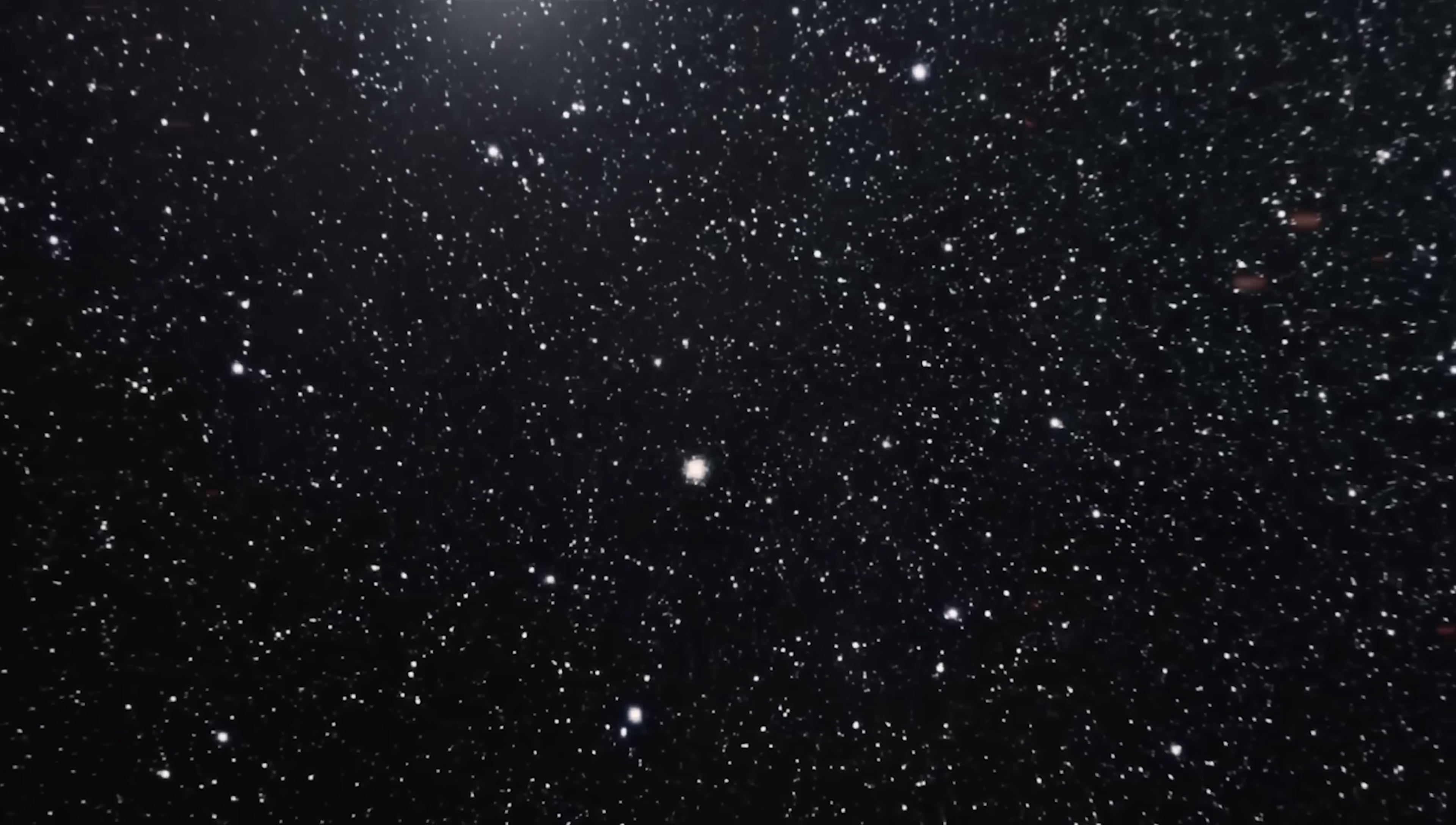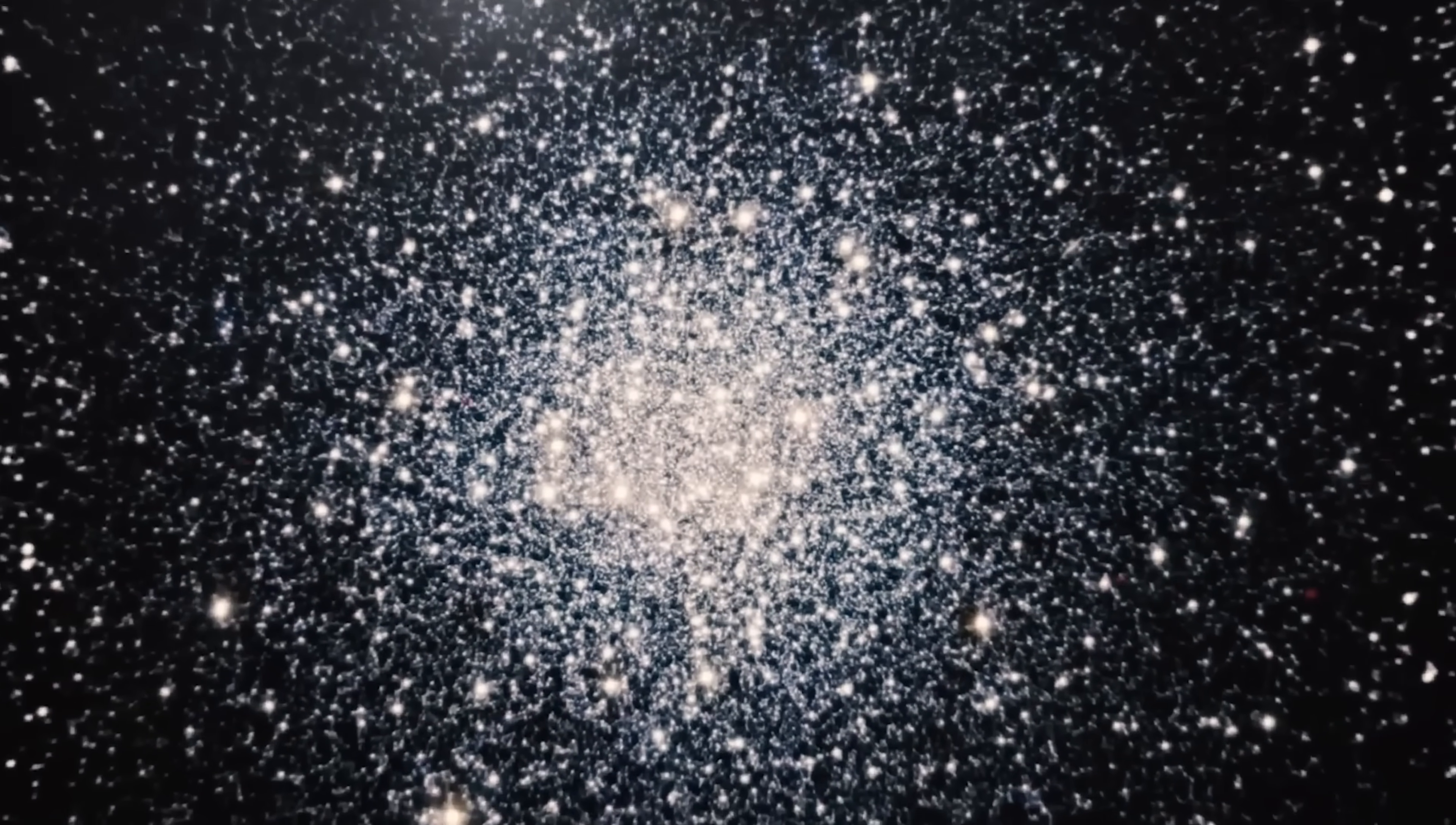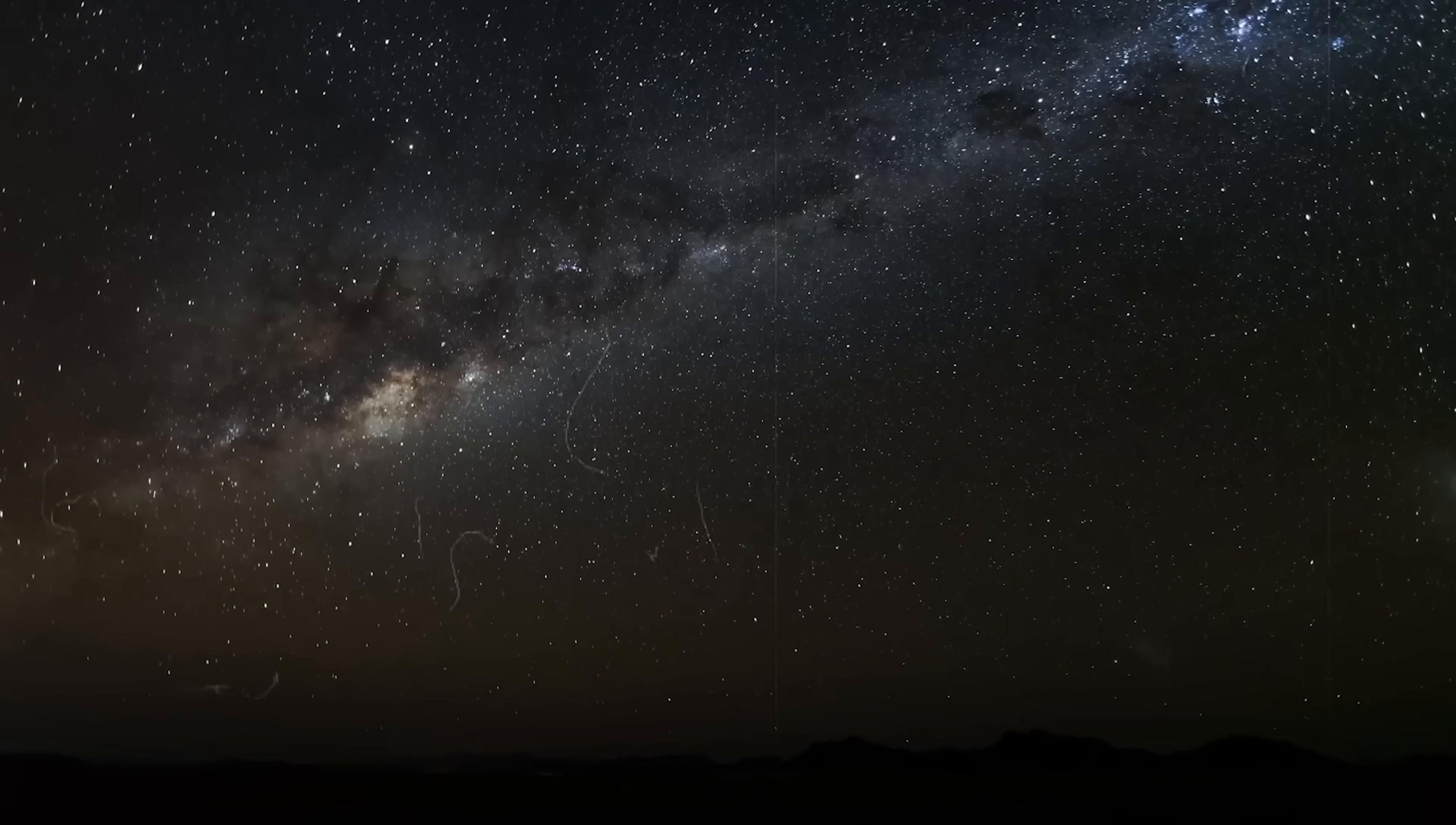Globular clusters, such as M92, are convenient cosmic laboratories because their stars form together, giving astronomers a unified population to analyze. Stars live out their lives differently depending on how massive they were at birth. Heavy stars burn hot and fast, while smaller ones linger for eons. By studying which stars in a cluster have evolved beyond their main fuel-burning stage, scientists can trace the cluster's moment of origin.